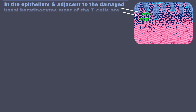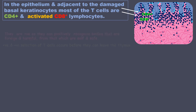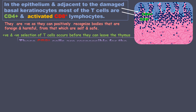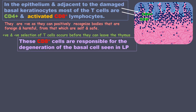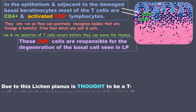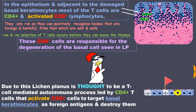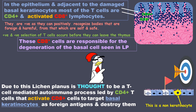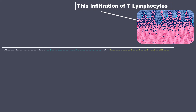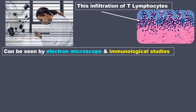In the epithelium and adjacent to the damaged basal keratinocytes, most of the T cells are CD4 positive and activated CD8 positive lymphocytes. These CD8 positive cells are responsible for the degeneration of the basal cells seen in lichen planus. Due to this, lichen planus is thought to be a T cell mediated autoimmune process led by CD4 positive T cells that activate the CD8 positive cells to target basal keratinocytes as foreign antigens and destroy them.